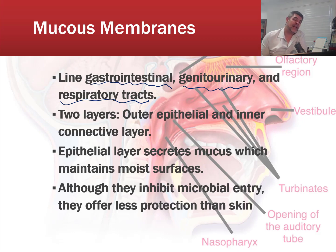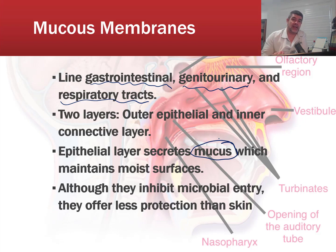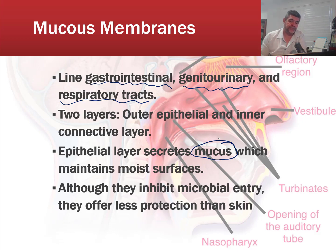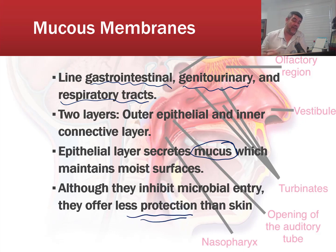Mucous membranes primarily have two main layers: an outer epithelial or surface layer, and an inner connective layer. The epithelial layer secretes the mucus, which maintains moist surfaces. This traps particles that make their way in — they get caught in this sticky substance and may be passed to an area where we expel them. We cough, sneeze, or vomit — each of these is an expelling action pushing something from inside our body to the outside. Mucous membranes do inhibit microbial entry, but they offer less protection than the skin and are a more hospitable environment for pathogens.